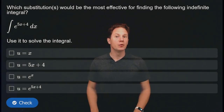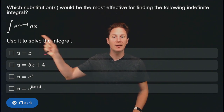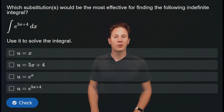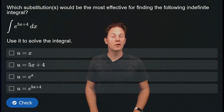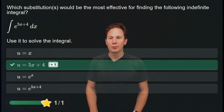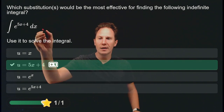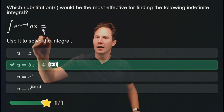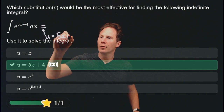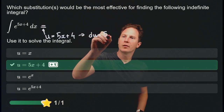Which substitution would be most effective for finding the indefinite integral of e^(5x+4) dx? Pause the video and select your answer. The answer is u = 5x + 4. Substituting, u = 5x + 4 means du = 5 dx.